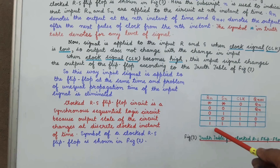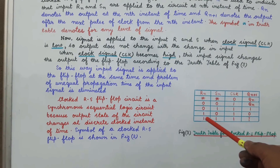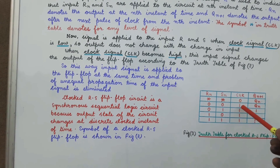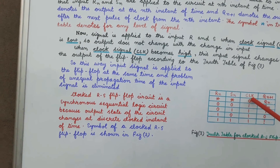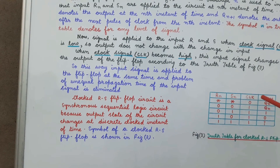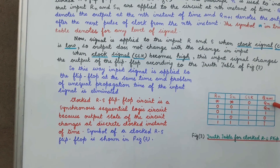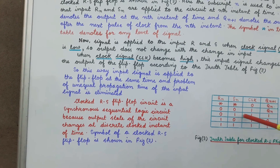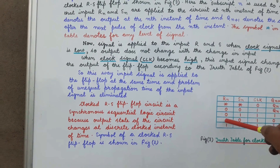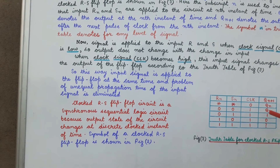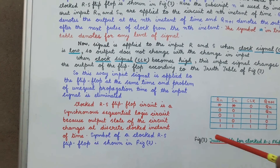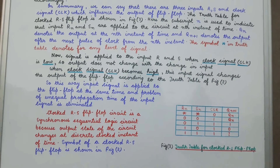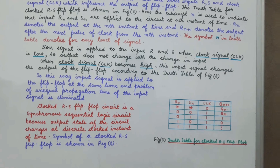These four conditions have been seen in the RS flip-flop as well. Here, the clock is applied: when the clock value is low, we give R and S but there will be no change in output. When the clock value is high, the output behaves just like an RS flip-flop given that the clock signal is high.